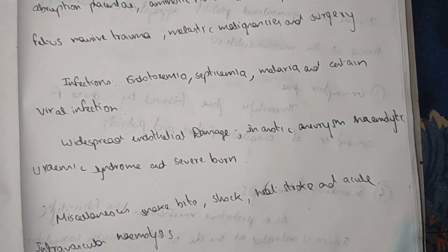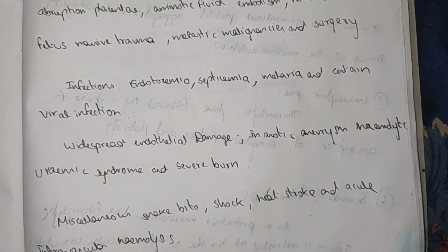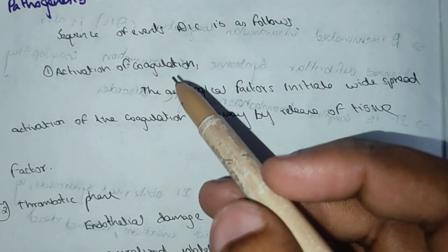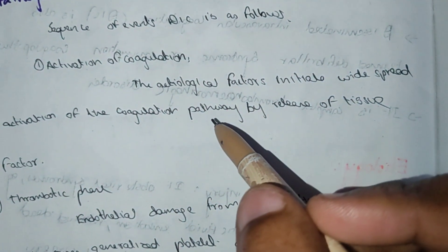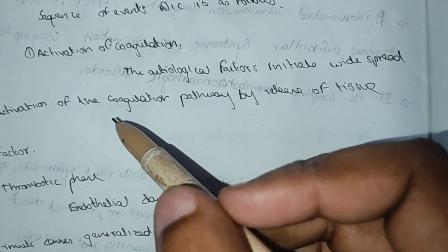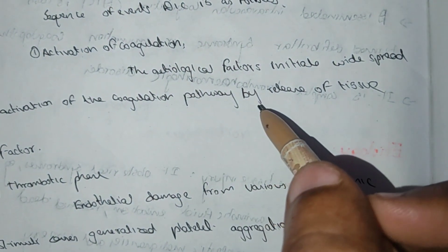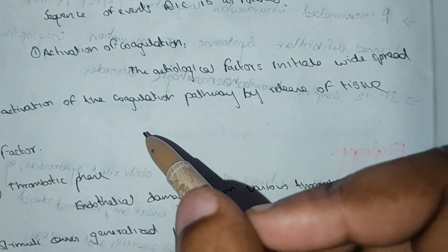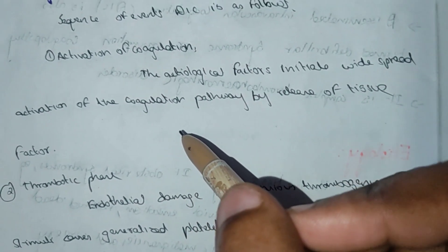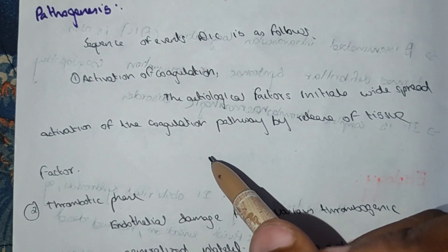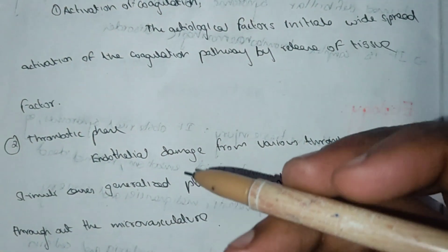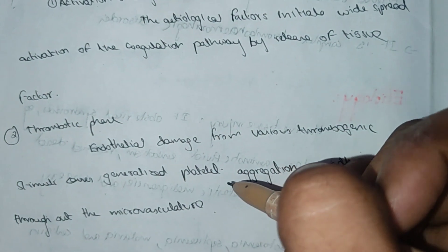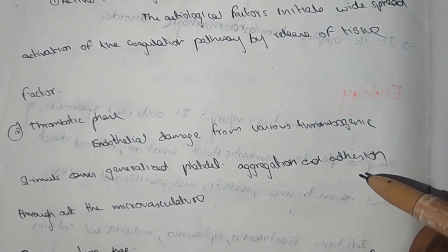The pathogenesis of DIC is a sequence of events. First is activation of coagulation: the etiological factors initiate widespread activation of the coagulation pathway by the release of tissue factor. Due to the release of tissue factor the coagulation pathway gets activated. This is the first step. The second is the thrombotic phase, where endothelial damage and various thrombogenic stimuli cause generalized platelet aggregation and adhesion through the microvasculature.